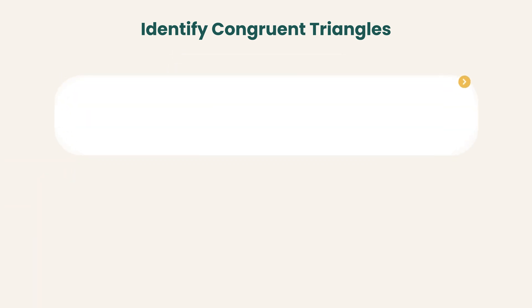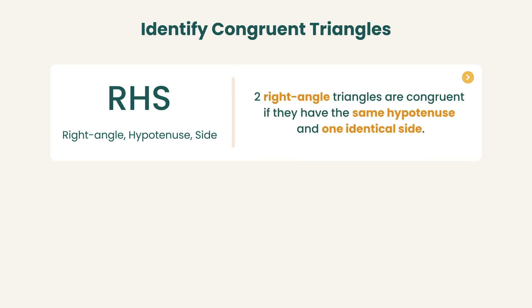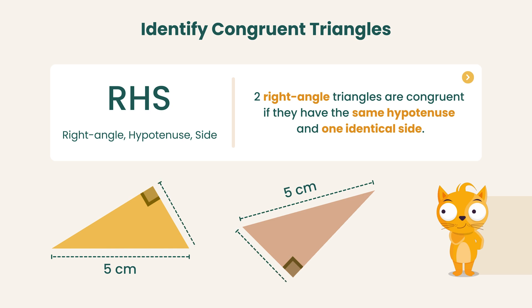The last one is RHS, right-angle, hypotenuse, and side. This applies only to right-angle triangles. Two right triangles are congruent if they have the same hypotenuse and one identical side.